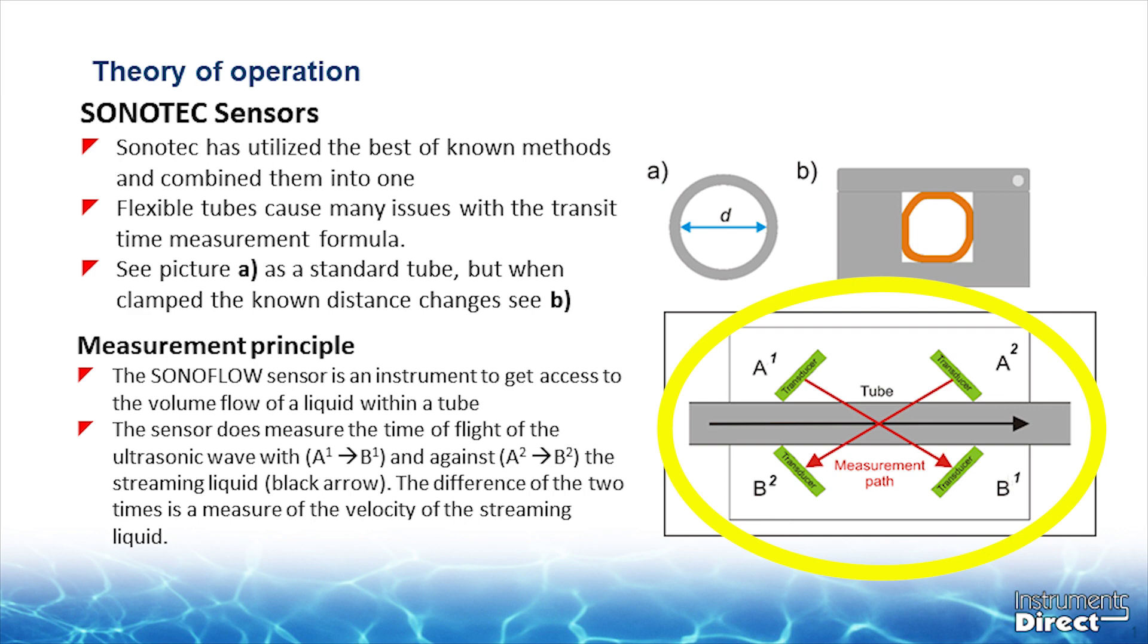As you can see in the diagram in the lower right-hand corner, the gray represents a flexible tube with the liquid flowing from left to right. Four piezo elements are arranged in an X pattern. The transmitter sends pulsating ultrasonic waves in a predefined frequency from one side to the other. So A1 sends a signal to B1, and it's going in the direction with the flow, and the transit time is noted.